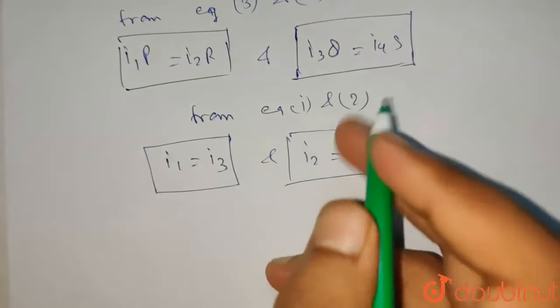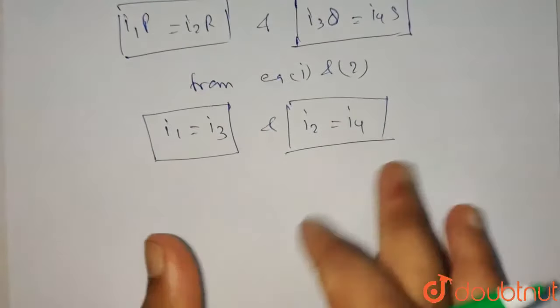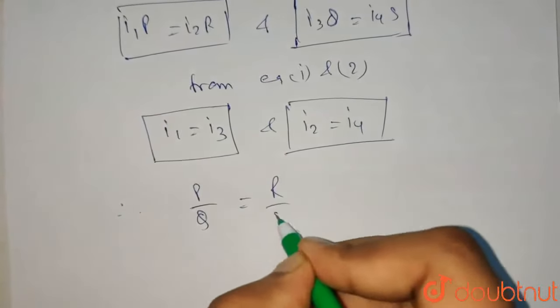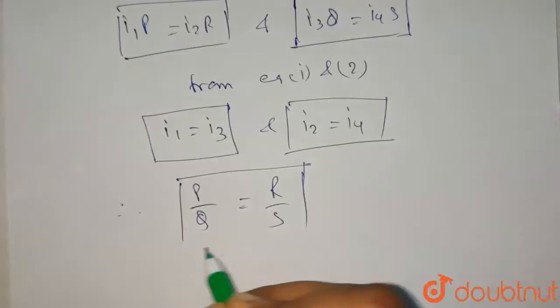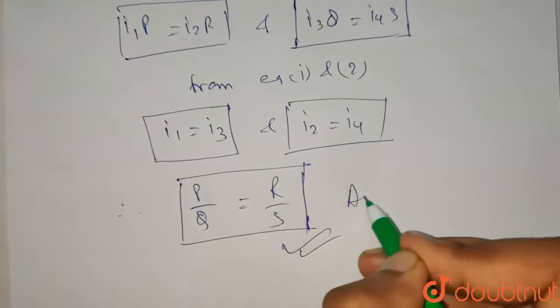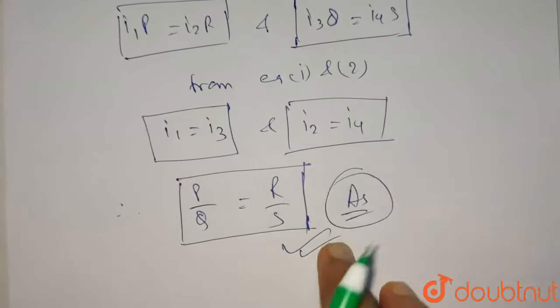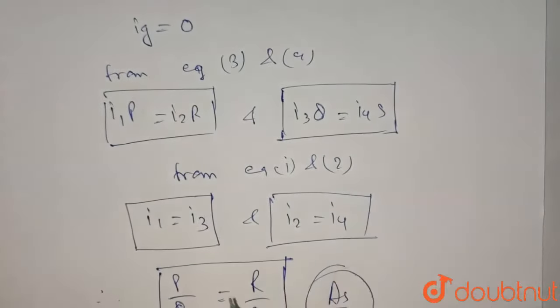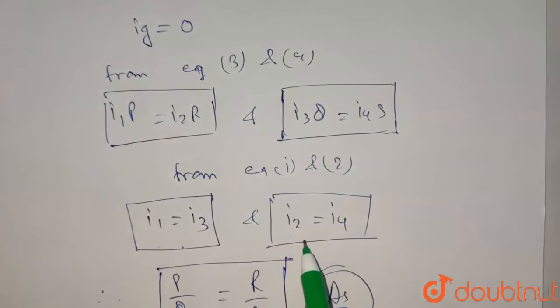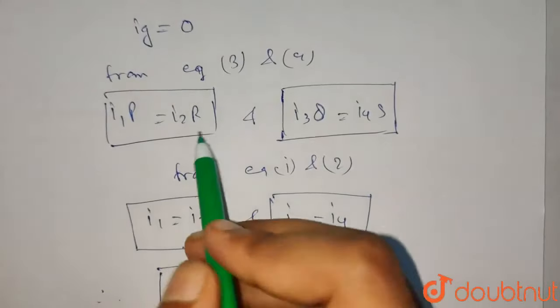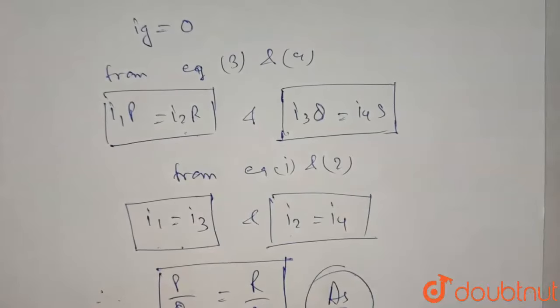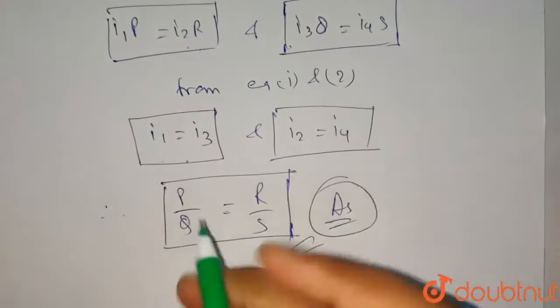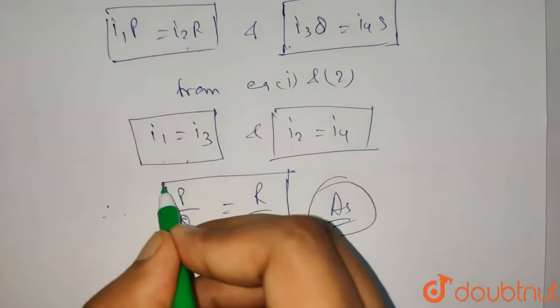So from all four conditions we can write P by Q equals R by S. This will be our proof. So what did we do? We first derived these two conditions from Kirchhoff's current law, then we wrote these two conditions from Kirchhoff's voltage law, and when we merged them, we got P by Q equals R by S. That's the answer.